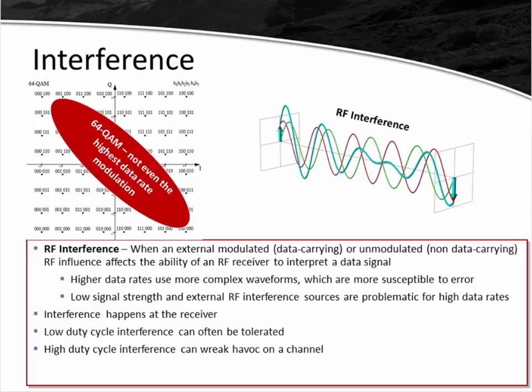Interference happens at the receiver, and that's where you need to look for it. Low duty cycle interference — where the interference only appears maybe 5 to 20 percent of the time on the medium — can often be tolerated, though your retry rate for 802.11 devices will probably go up. High duty cycle interference can wreak havoc on a channel. Some devices have a near-100 percent duty cycle, particularly some 802.11-channel video devices that aren't really 802.11 but use those channels and have very high utilization. We're seeing several of these now appear in the 5 GHz range as well.